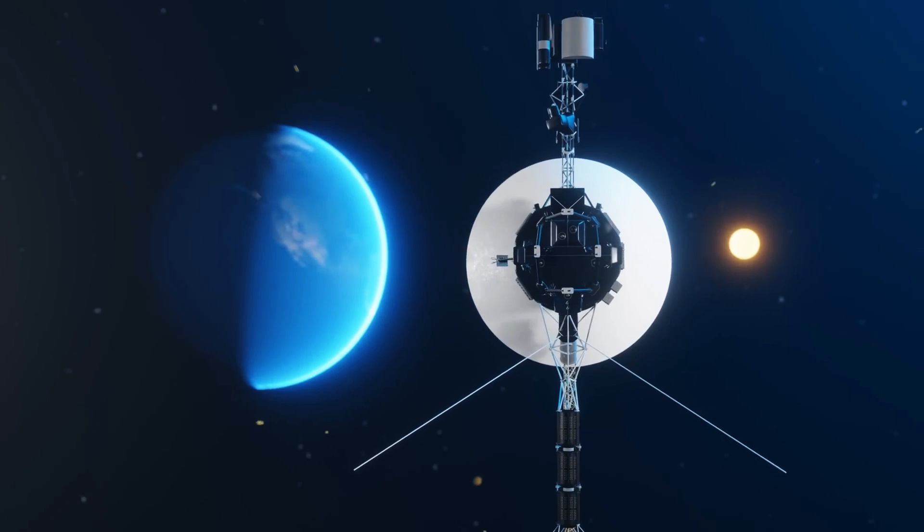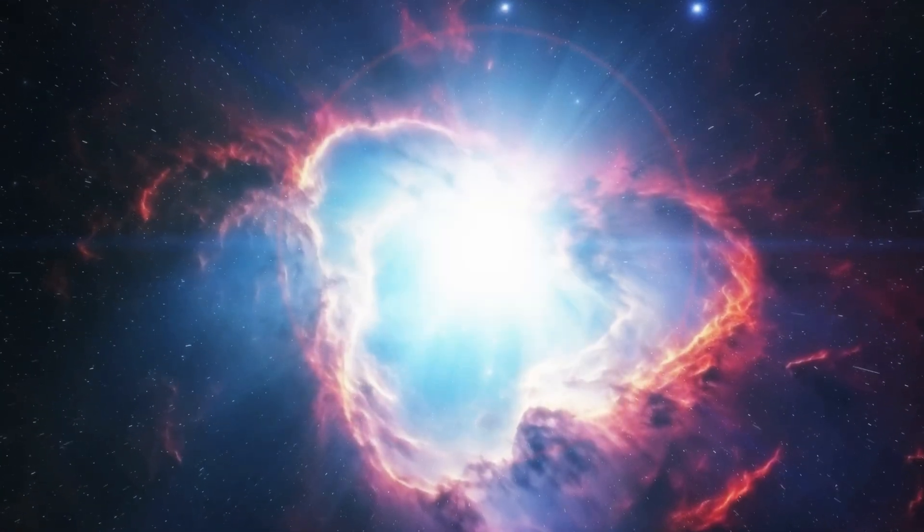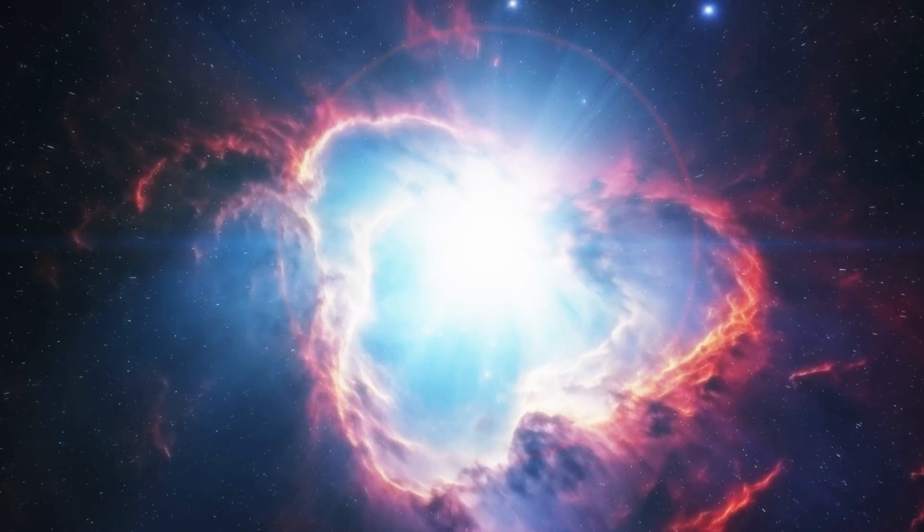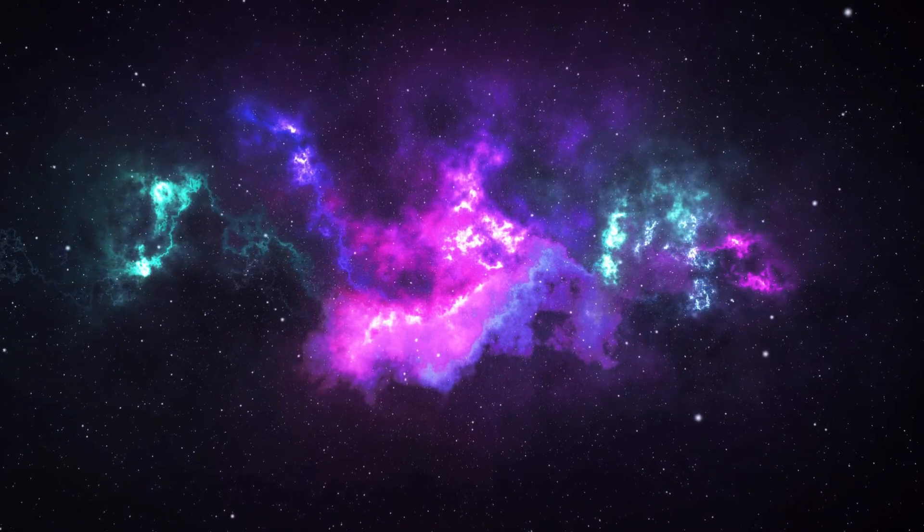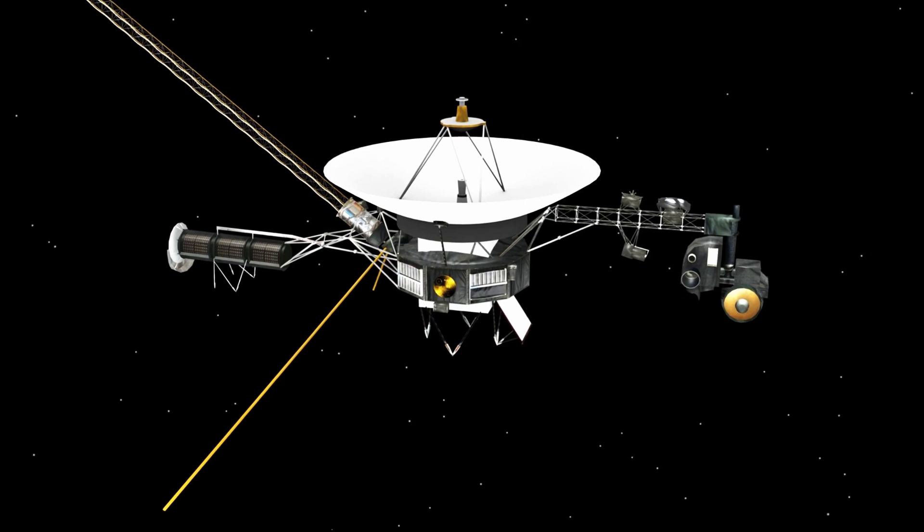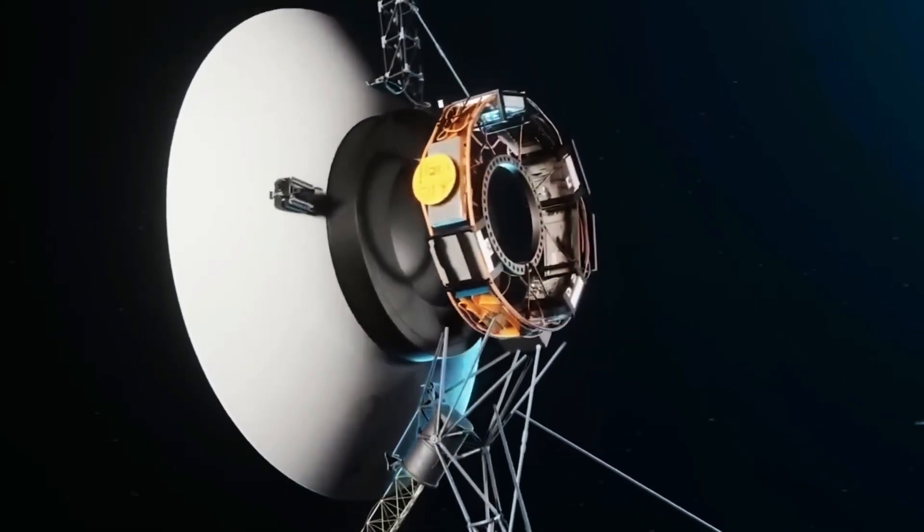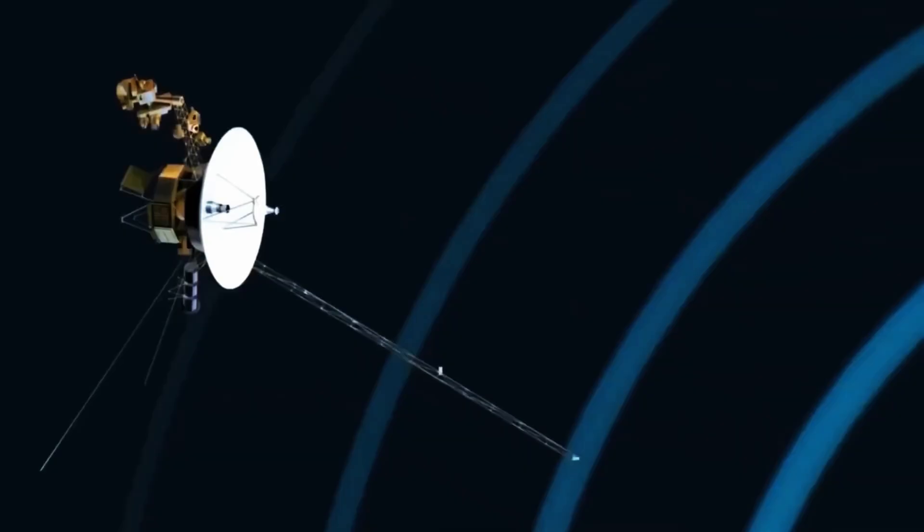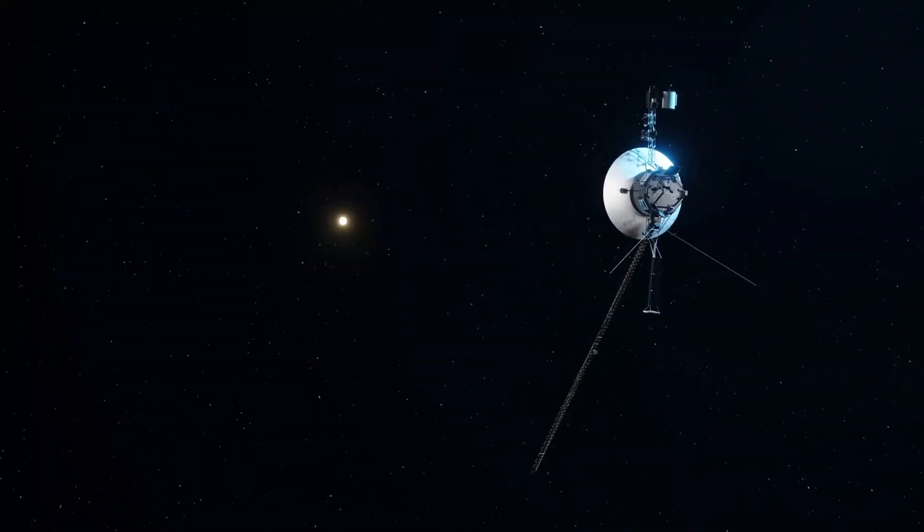This structure began forming around 14 million years ago, when roughly 15 supernovae exploded over millions of years. The immense pressure from these explosions pushed interstellar gas outward, creating a vast bubble with a dense outer shell. Amazingly, this bubble is still expanding. Initially, it expanded at a speed of 60 meters per second, but data from the European Space Agency's Gaia Space Observatory indicates that expansion continues today, though at a slower pace of about 4 miles per second.